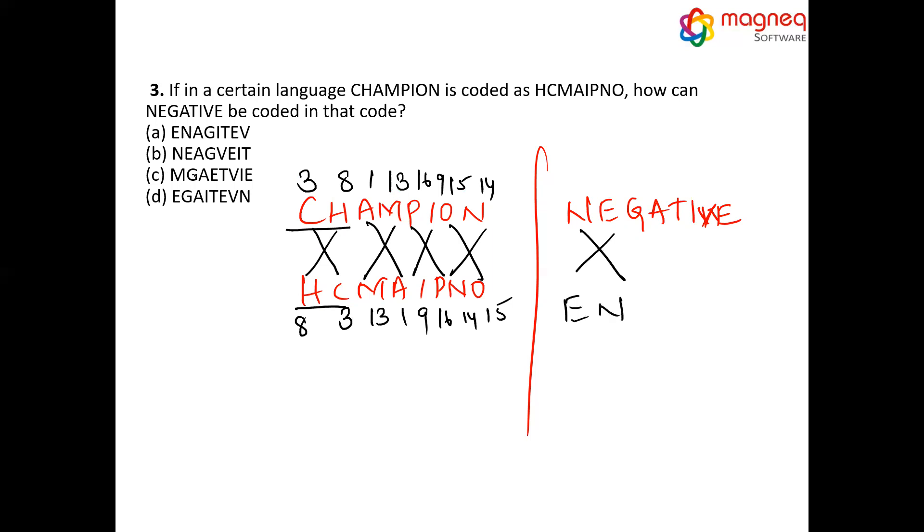Now, similarly, no need to write the place values here. We know the pattern. E, N. Can I fix my answer as option A? No need to calculate entirely. Answer is option A - ENAGITEV.